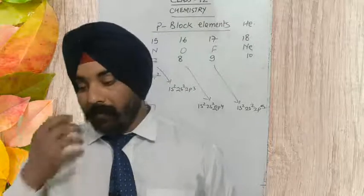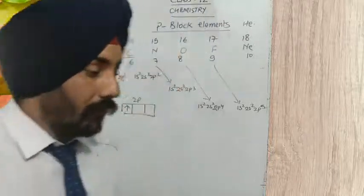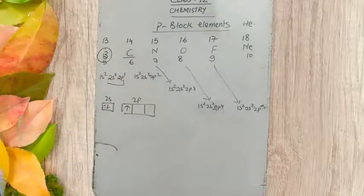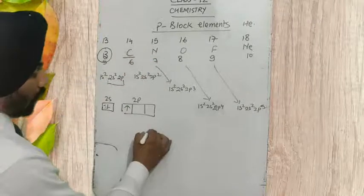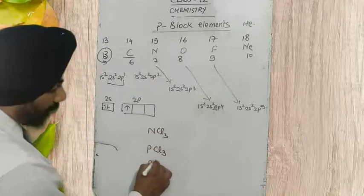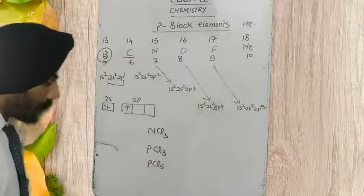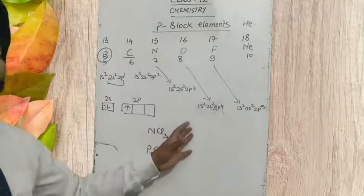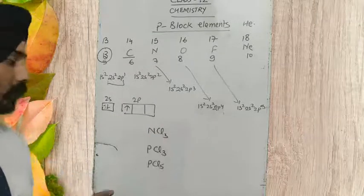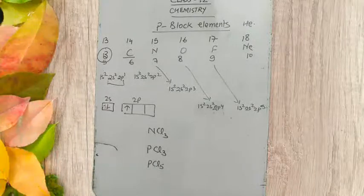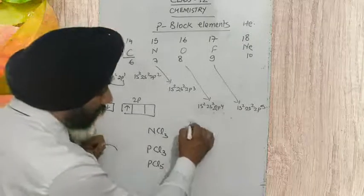That is why, if we see nitrogen and phosphorus — nitrogen chloride is NCl₃, and phosphorus has both PCl₃ and PCl₅. Why does NCl₅ not exist? Why does nitrogen not show pentachloride? Only phosphorus can show pentachloride. Let's try to understand this.